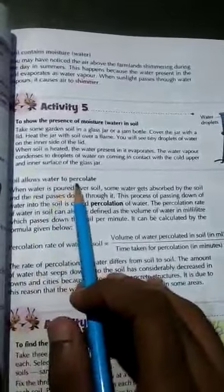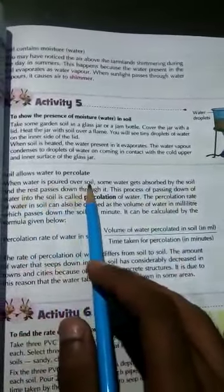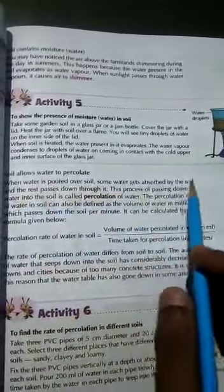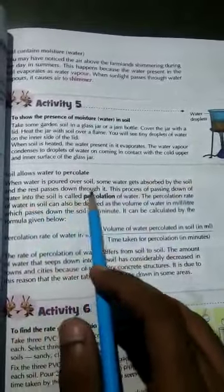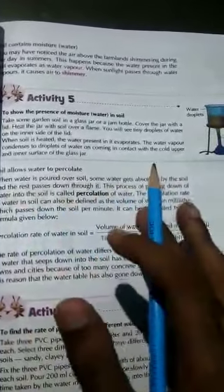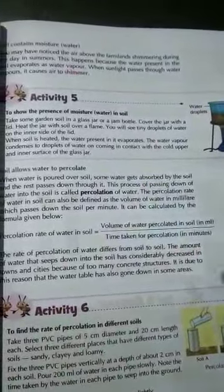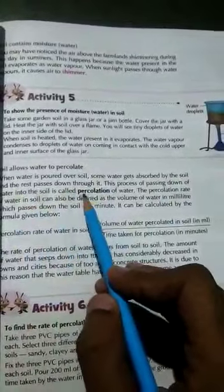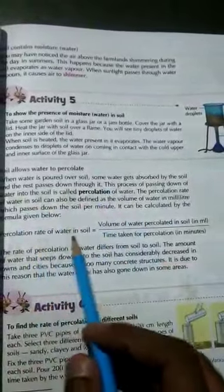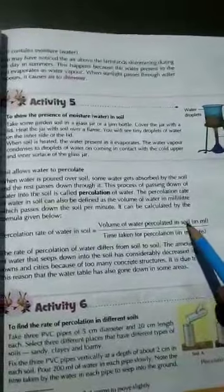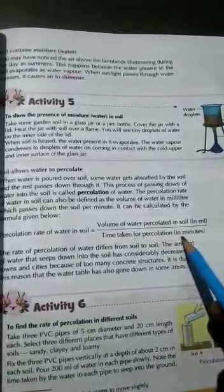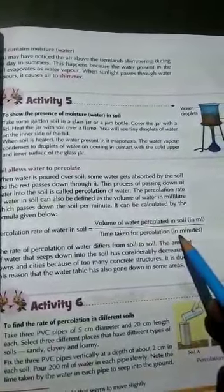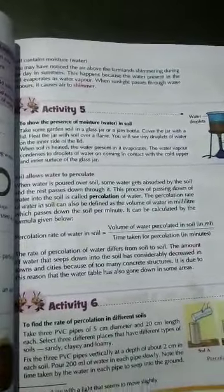Soil allows water to percolate. What is percolate? When water is poured over soil, some water gets absorbed by the soil and the rest passes down through it. This process of passing down of water into the soil is called percolation of water. What is the rate of percolation? Volume of water percolated in the soil divided by time taken for percolation. That is called rate of percolation.